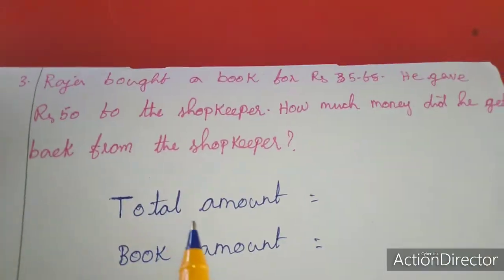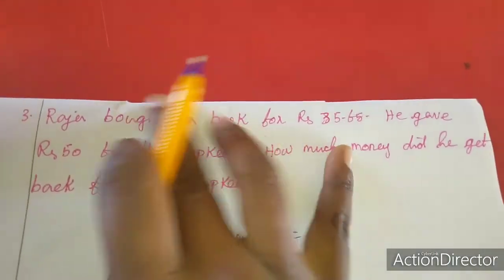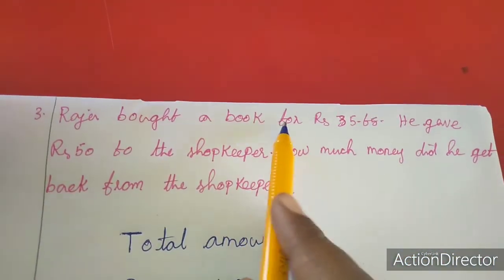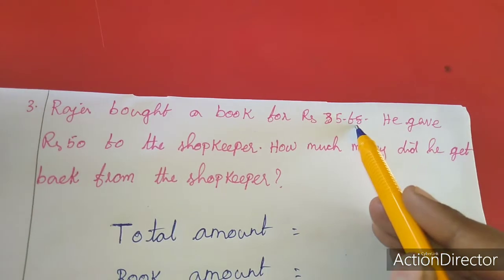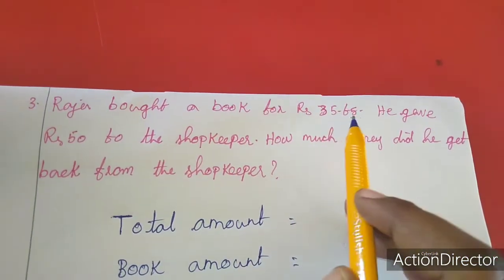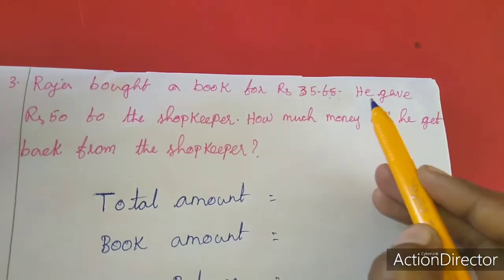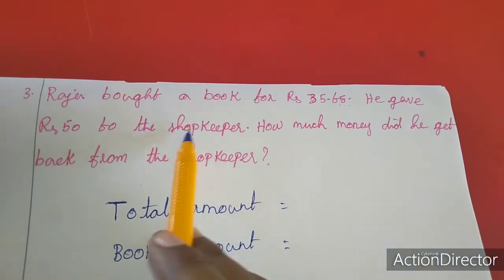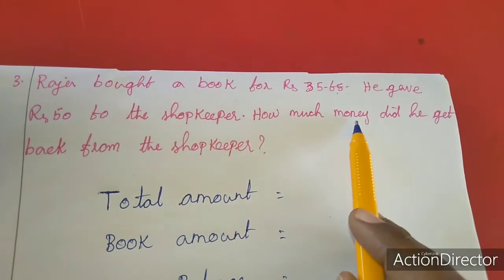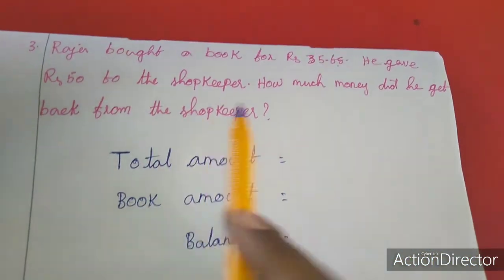Now I will move to the third sum. Third sum is the word problem. I am going to read and then I will give you an explanation. Listen here. Raju bought a book for rupees 35.65. He gave rupees 50 to the shopkeeper.